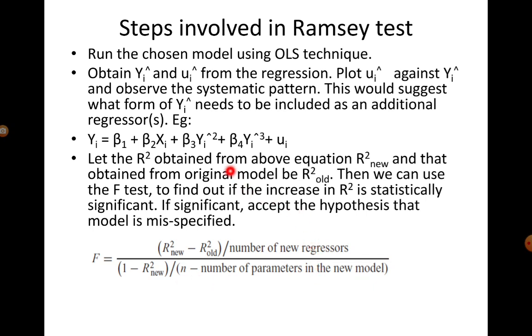So, in this model, I am assuming that yi square and yi cube have been added newly. So, the number of parameters in this new model is 1, 2, 3 and 4. So, this will be n minus 4 in this particular case.